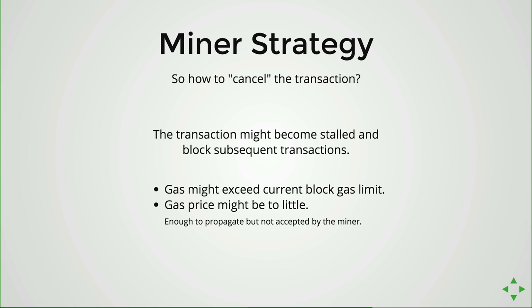This leads to some consequences. Once a transaction is broadcast on the network, it cannot be canceled — it will be there forever. Sometimes transactions float in the network and can never be executed: future transactions the miner keeps around, transactions that were valid at a certain point but become invalid after the block gas limit is lowered, or transactions whose gas price is too low and all miners decide not to include. Sometimes we need to cancel a transaction — we no longer want it executed.